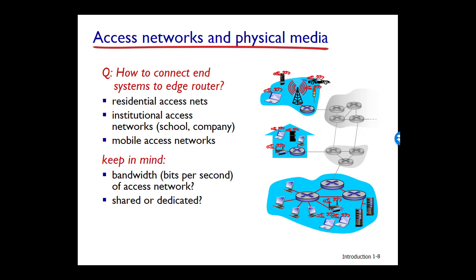Having considered the applications and end systems at what we're referring to as the edge of the network, let's next consider the access network. The access network is the network that physically connects an end system to the very first router — also known as the edge router — on a path from the end system to any other distant end system. If you have a computer lab at your school, it would be considered at least part of an access network, and that router connecting the school's network of networks is the first link to the internet.